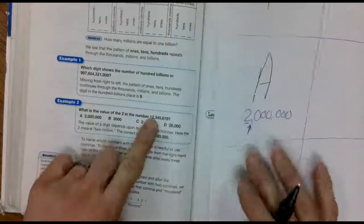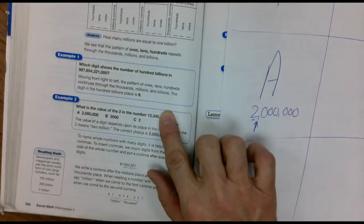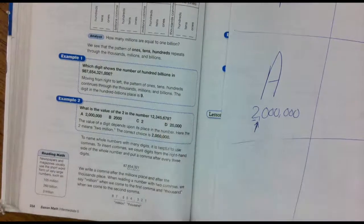Now let's read this number together. Chunk it. Twelve million, three hundred and forty-five thousand, six hundred seventy-eight.